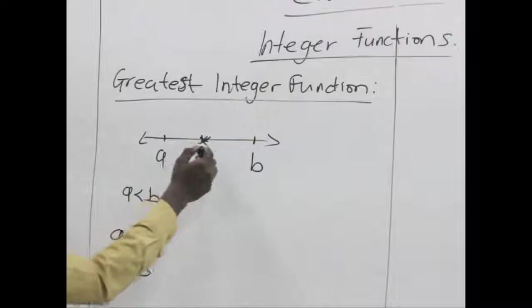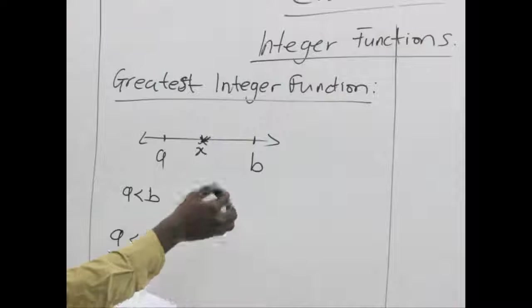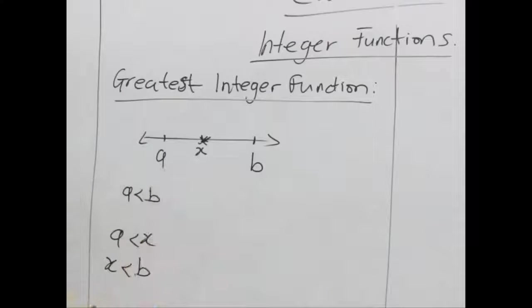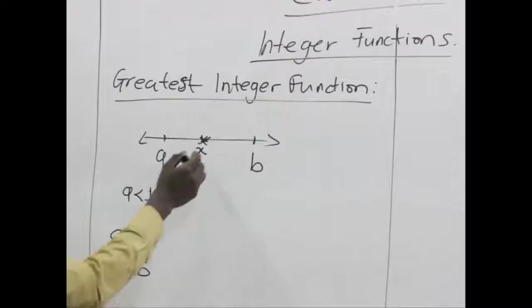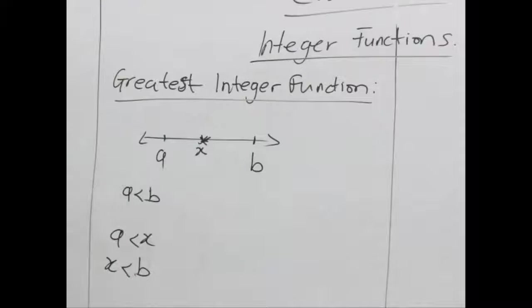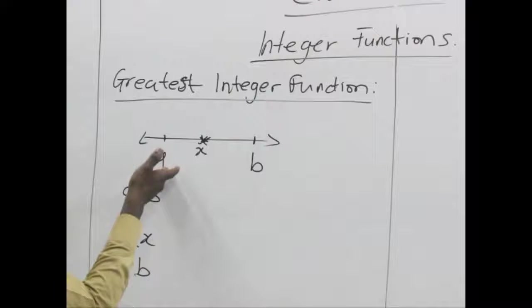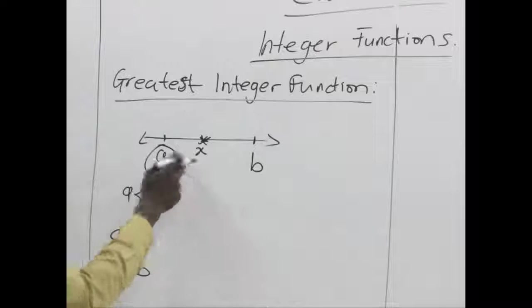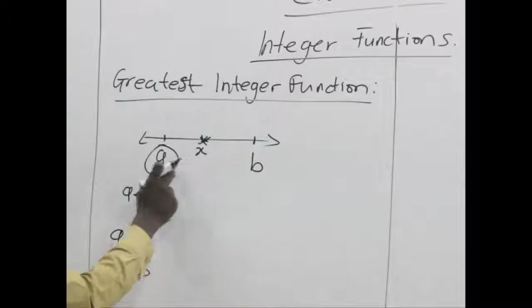So if x is let's say a number which is in between a and b. And we want to find the greatest integer function. We want to find the greatest number which is less or equal to x. Here the greatest number which is less or equal to x is a. You can see that a is less than x. It's less than x.